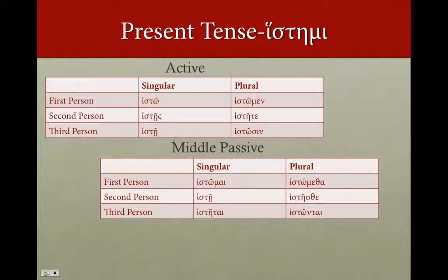Histemi, also very simple. Consider it is also contracting, just like Tithemi. So histo, histase, histae, histone, histate, histosin. And the middle passive: histone, histate, histotai, histone, histaste, histontai. You've got those endings. The reason there's a circumflex is because of the contraction.